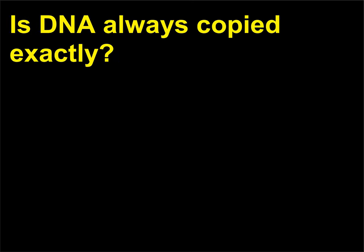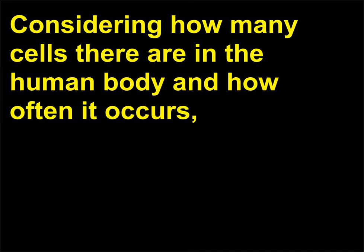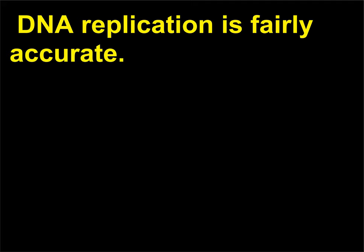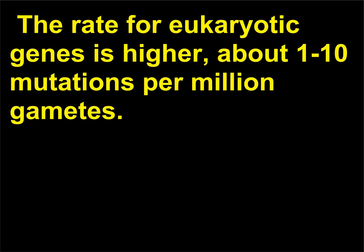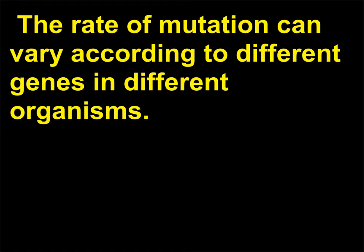Is DNA always copied exactly? Considering how many cells there are in the human body and how often it occurs, DNA replication is fairly accurate. Spontaneous damage to DNA is low, occurring at the rate of 1 to 100 mutations per 10 billion cells in bacteria. The rate for eukaryotic genes is higher, about 1 to 10 mutations per million gametes. The rate of mutation can vary according to different genes in different organisms.